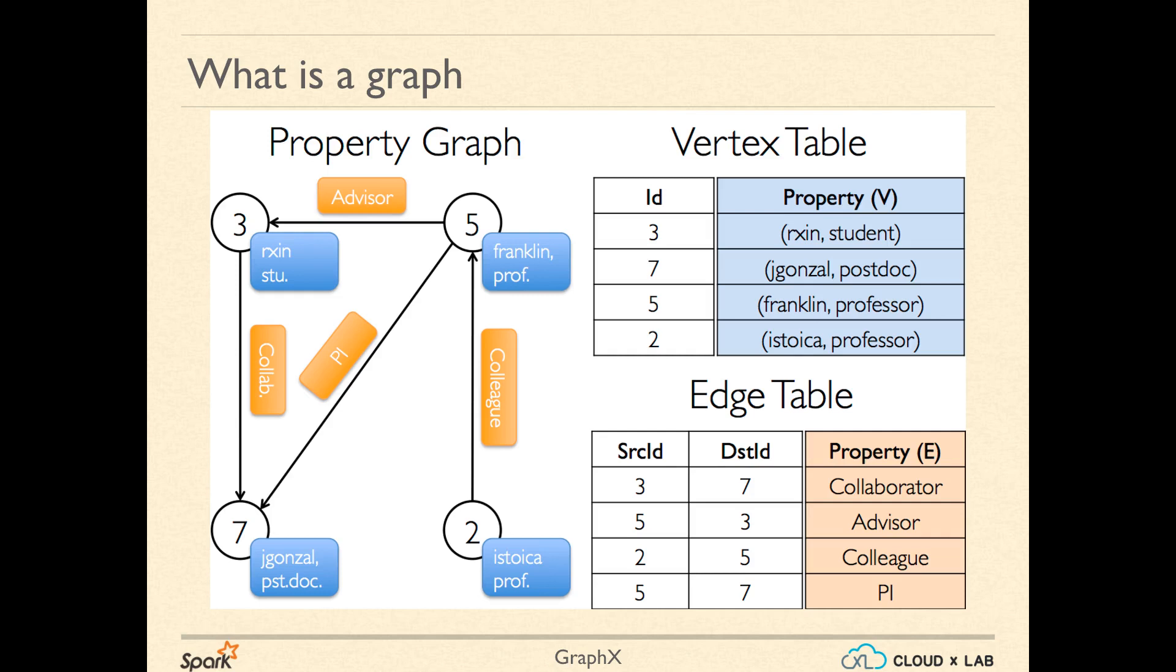A Graph is a data structure having vertices and edges. The vertices are connected via the edges. We can represent complex relationships using Graph. In this example, the vertices represent people. Each vertex has an ID and properties. Rxsin is a student, Jgonjal is a postdoctoral candidate, and so on.